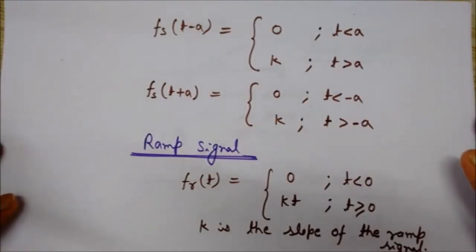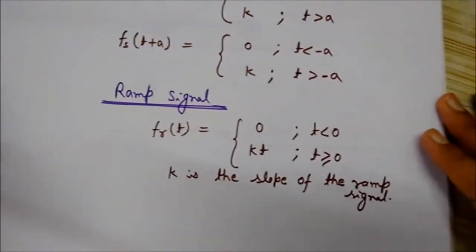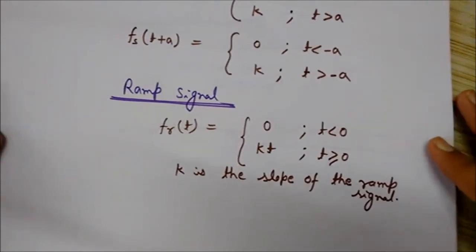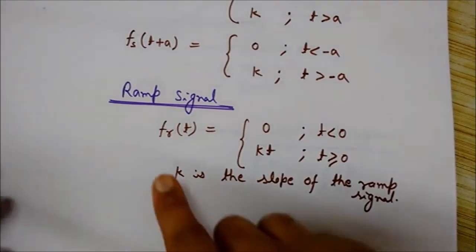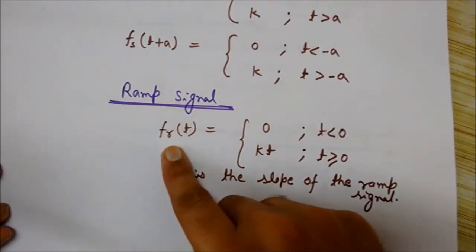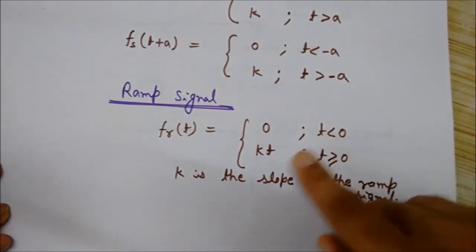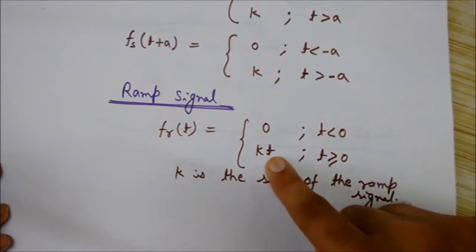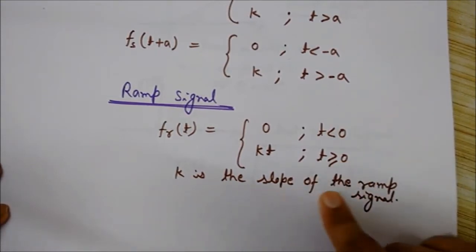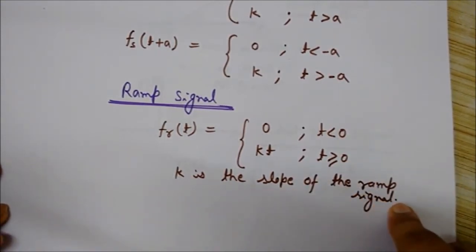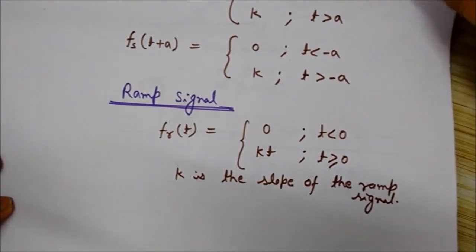Now we will look at another kind of signal, another standard signal known as ramp signal. The ramp signal can be defined mathematically as fr — where R stands for the ramp — so fr of t equals 0 for t less than 0, and its value is kt for values of t greater than or equal to 0. Here k is the slope of the ramp signal.